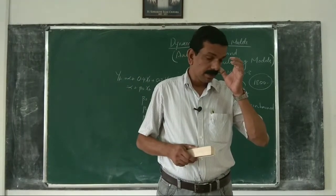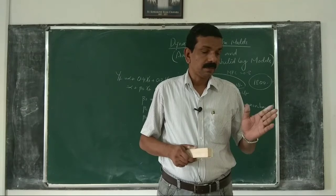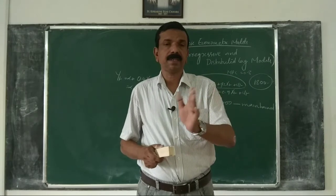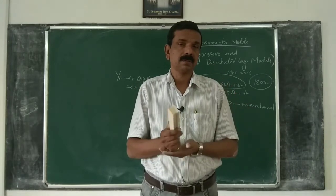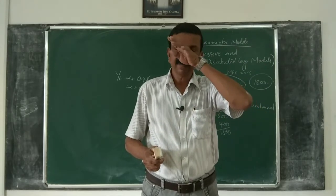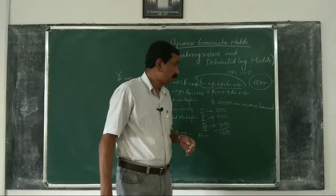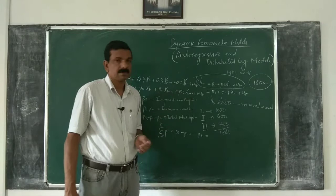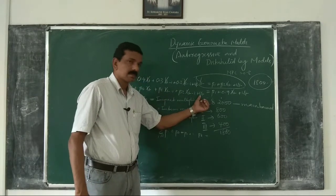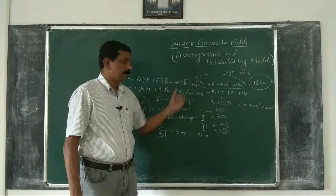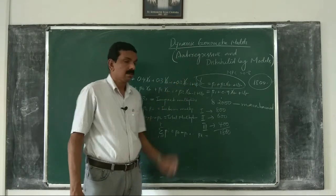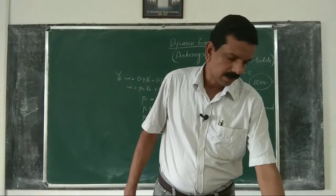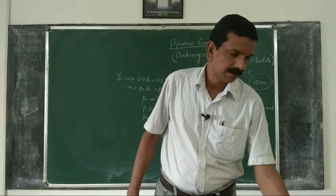If we believe that there is such a dependence on past values, then we have to specify the model by using the lagged values of dependent variables. That will make the model dynamic. This is one specific example; there are a lot of examples you can cite from economic theory.